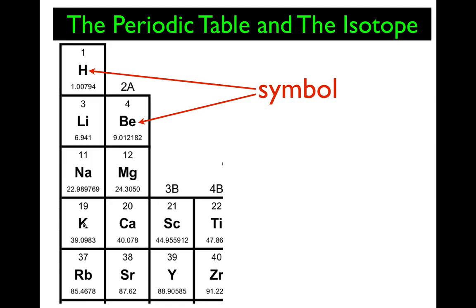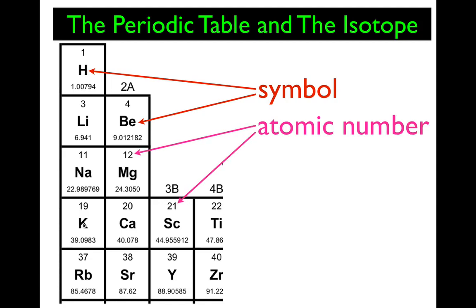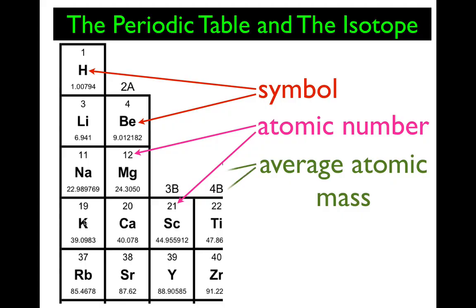Potassium is K, which stands for Kalium — the German word for potassium. So every element has a symbol. Then we have an atomic number — this whole number, usually at the top, is the atomic number, which is the number of protons in the nucleus of an atom. Every magnesium has 12 protons; any atom that has 12 protons we call magnesium. Any atom that has 11 protons in the nucleus is sodium. All atoms of potassium have 19 protons in the nuclei. Then there's the average atomic mass, which is that decimal number — we'll cover how to calculate it in a future video, as it is related to isotopes.